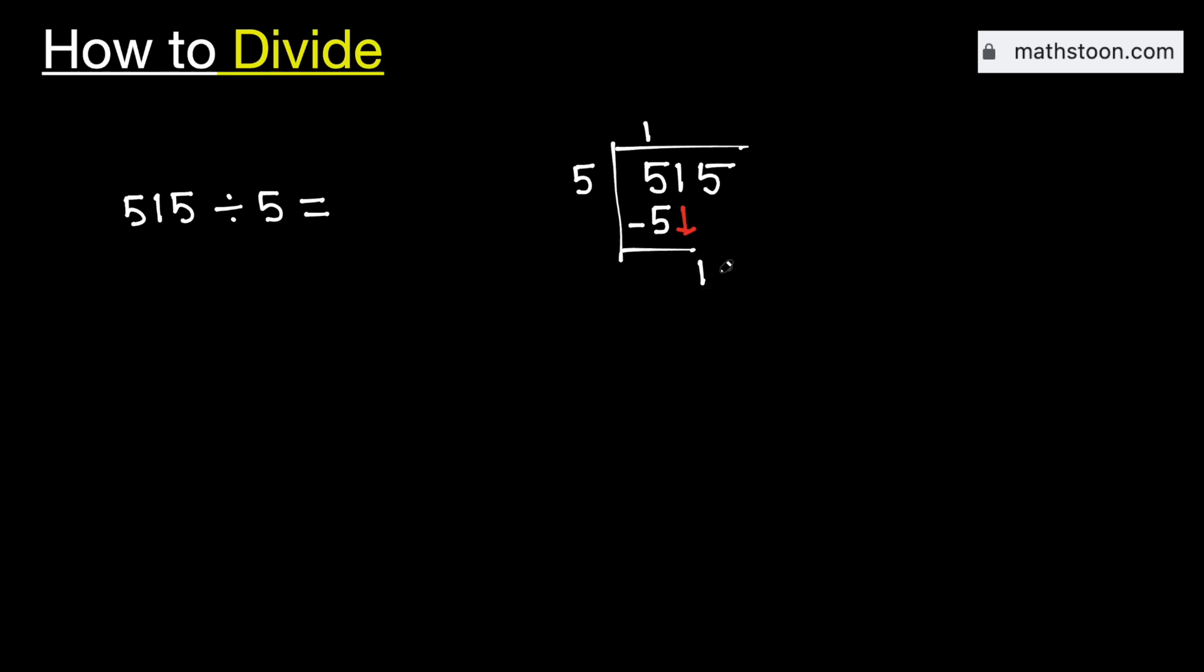But in this case, although 1 is less than 5, but as we have brought down this number 1 here, we need to divide it. We know that 5 times 0 is 0. Subtract, we get 1.